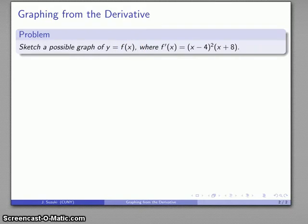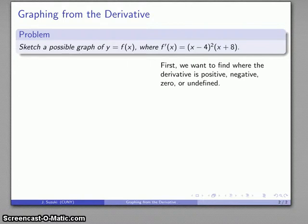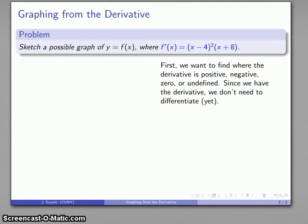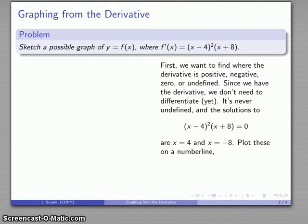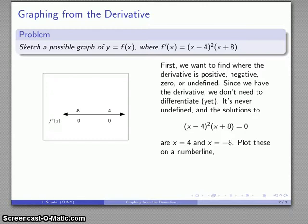A good starting point is any place where the derivative is positive, negative, zero, or undefined. Finding where it's zero or undefined is important because the only time we can change from positive to negative is by passing through a point where the derivative is zero or undefined. Since we're given the derivative directly, we don't need to differentiate — the question is where is the derivative equal to zero. It's never undefined because it's a polynomial, and setting the product equal to zero, solving each factor, gives x equals 4 and x equals negative 8.